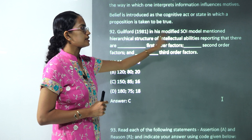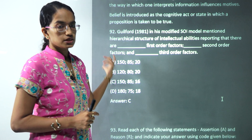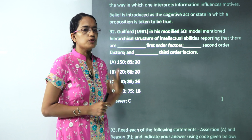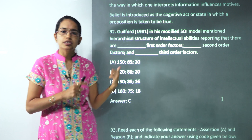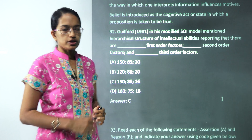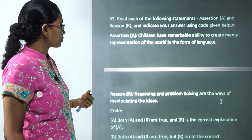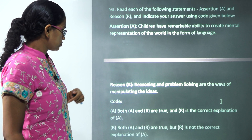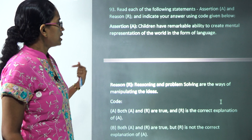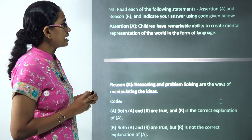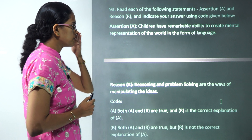The next question covers Guilford's factors of intelligence. In his modified model, there were 150 first-order, 85 second-order, and 16 third-order factors. This is an important question — Guilford comes up frequently, and you need to know both his original and modified model of intellect.